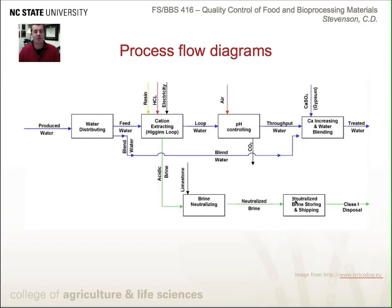The next diagram is the process flow diagram. It's a simple process of showing how inputs go into particular steps. We have processes between the steps that all lead to some sort of output, which can be byproducts, actual products, or waste.